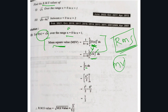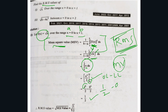Here a = 0 and b = 1, so b minus a = 1 minus 0 = 1. The integral of x dx is x²/2. Substituting upper limit minus lower limit: (1)²/2 minus (0)²/2 = 1/2 minus 0 = 1/2. So the mean square value is 1/2. To get the root mean square value, simply take the square root: RMS = √(1/2) = 1/√2.